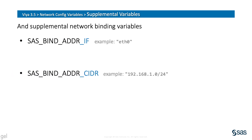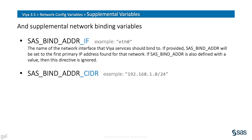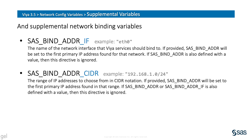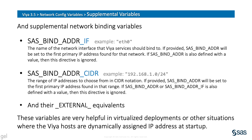There are also some supplementary bind variables. SAS_BIND_ADDR_IF allows you to specify a network interface by its name. If this variable is used, then SAS_BIND_ADDR will be set to the first IP address found for that specified network interface. SAS_BIND_ADDR_CIDR can be used to specify a range of possible IP addresses — if used, SAS_BIND_ADDR will be set to the first IP address found available in that range. There are external equivalents for these two which work similarly. These variables are useful in virtualized environments or wherever Viya hosts are dynamically assigned IP addresses at startup.